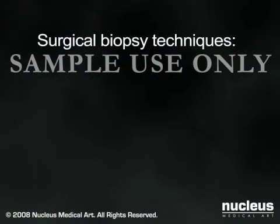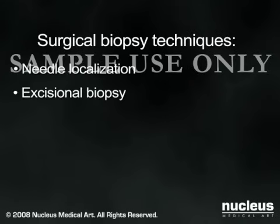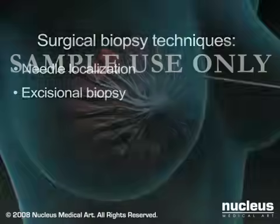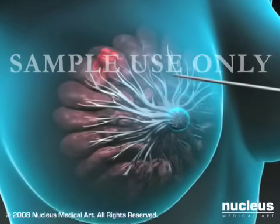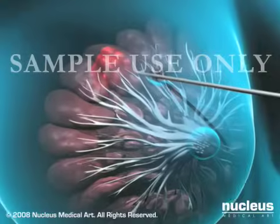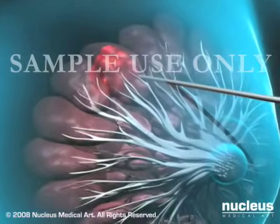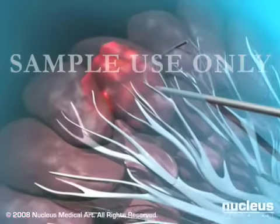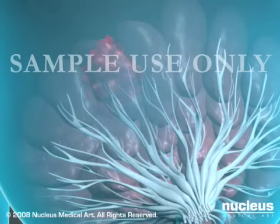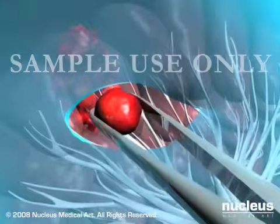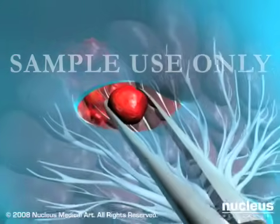Breast surgery is done in an operating room using two techniques: needle localization and excisional biopsy. For needle localization, a needle and wire will be inserted into the breast under mammogram or ultrasound guidance in order to mark the location of the suspicious area. Your surgeon will then make an incision in the breast at the site of the wire and remove the targeted area.